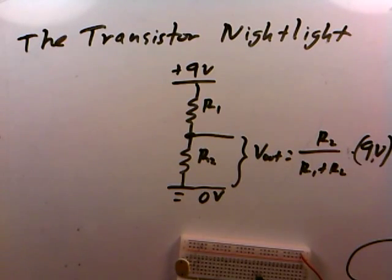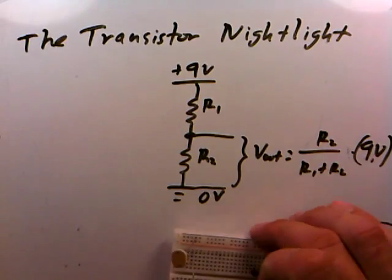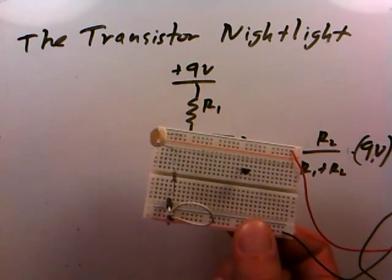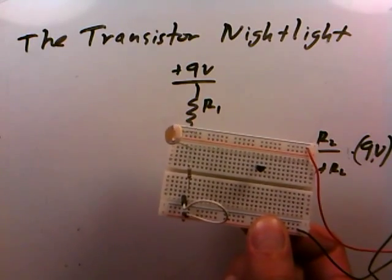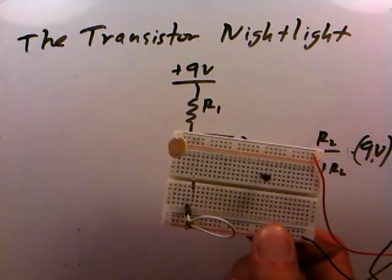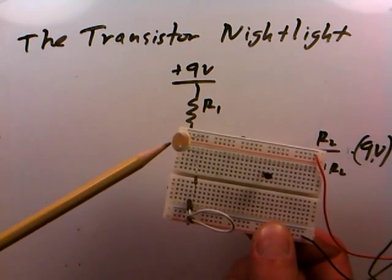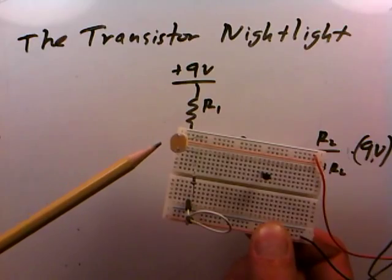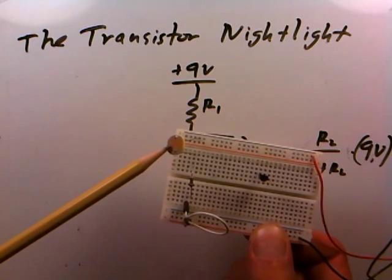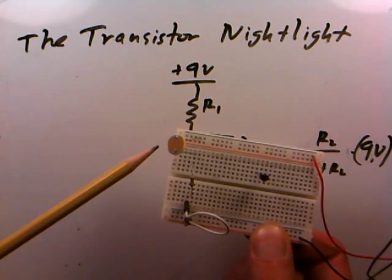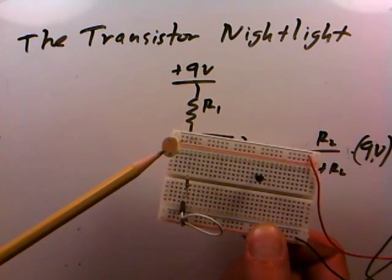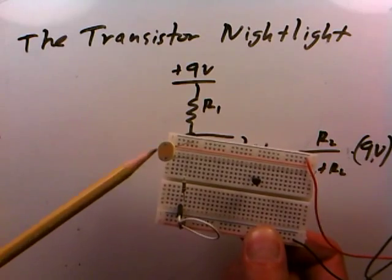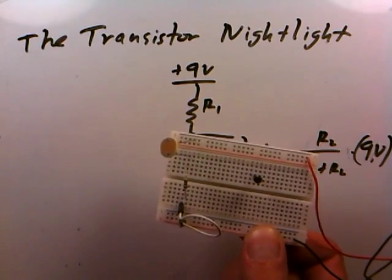The first thing we need to do in a project like this is monitor the light level in the room. We've seen how we can do that with one of these photoresistors — a cadmium sulfide photoresistor. The resistance goes down when it gets bright out, so this can sit and stare at the light level in a room.